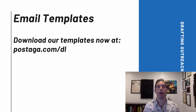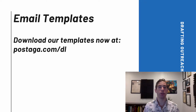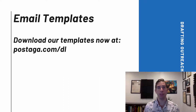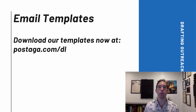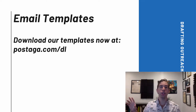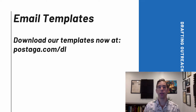To save you some time, we drafted some email templates for you that you can work off of. These can be your starting point — just check out postaga.com/dl and you can get those templates. You also have some more resources at your disposal, including a spreadsheet template for monitoring and tracking your email outreach.